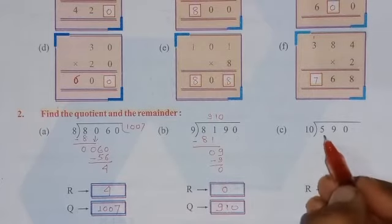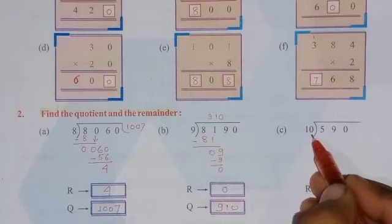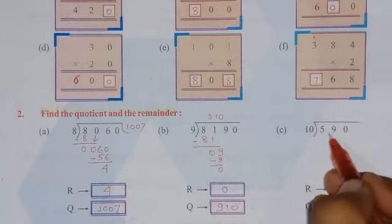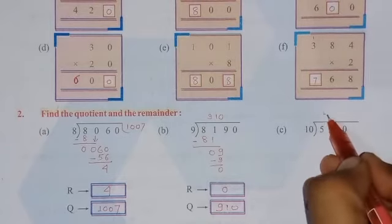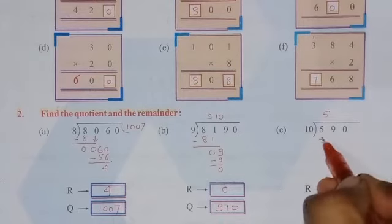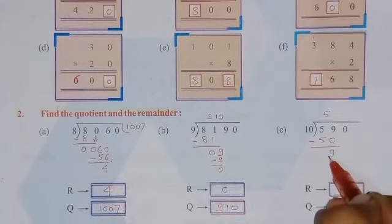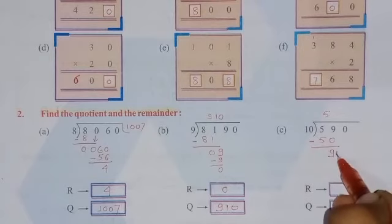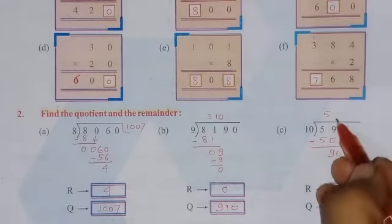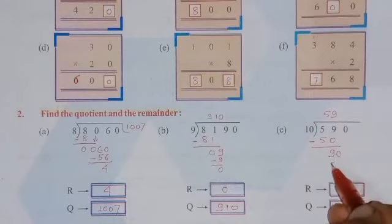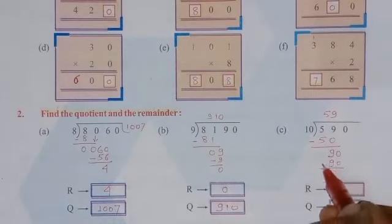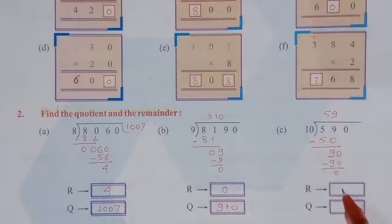In the next one, divide by 10. So we will take the number 59. So 10 5's are 50. And if I subtract I will get 9. Now I will write 0 here. Number is 90. So 10 9's are 90. And the remainder will be 0. So remainder is 0 and quotient is 59.